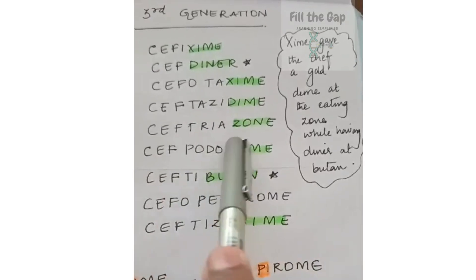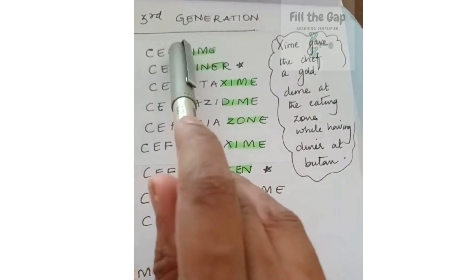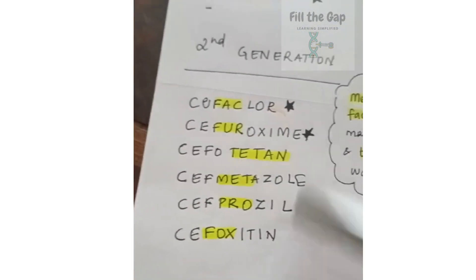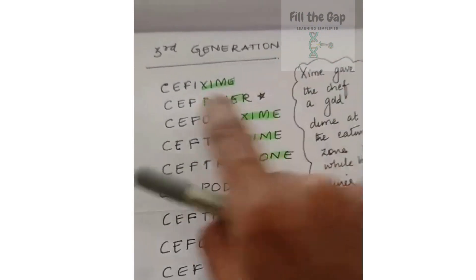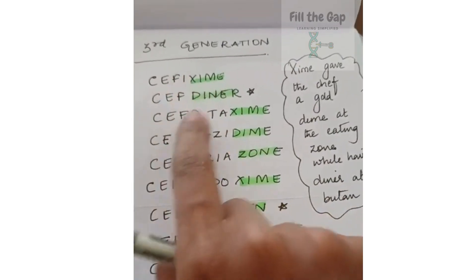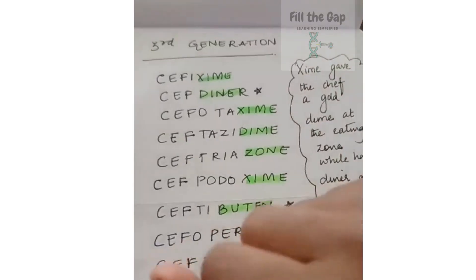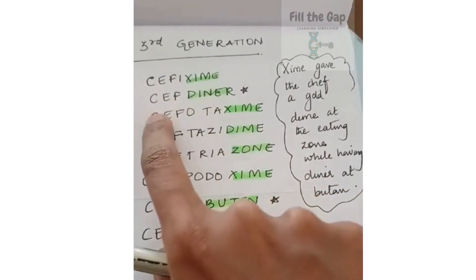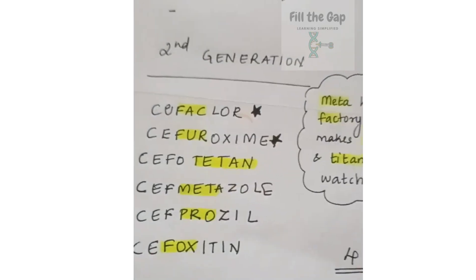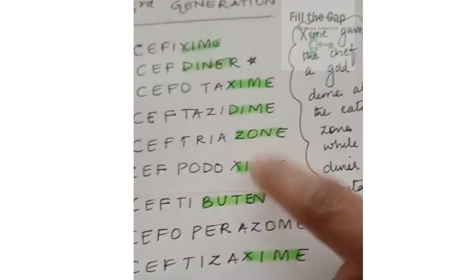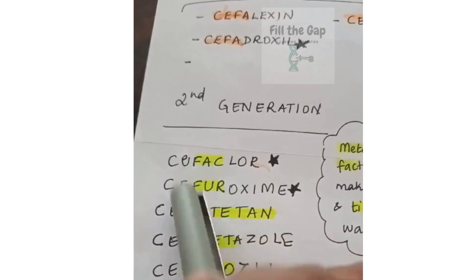But there is an exception. If you remember anything ending with 'zyme,' 'dime,' or 'zone' as third generation, the problem is there is another 'zyme' in second generation — that's why I put a star here. The MCQ could be: 'All of the following are third generation cephalosporins except,' with options cefixime, cefdinir, cefotaxime, and cefuroxime. When you see 'zyme' you might think it's third generation, but cefuroxime is actually second generation.